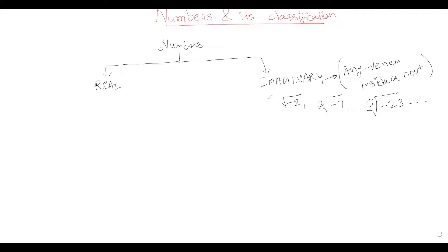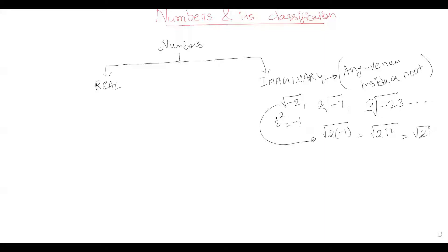In the case of imaginary numbers, there is a symbol called iota, where iota squared equals minus one. For example, square root of minus two can be written as square root of two times minus one, which simplifies to square root of two times i squared, giving us square root of two times i. So any negative number inside a root can be simplified in terms of iota.